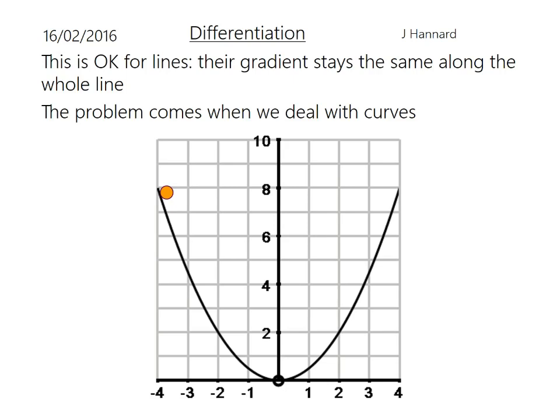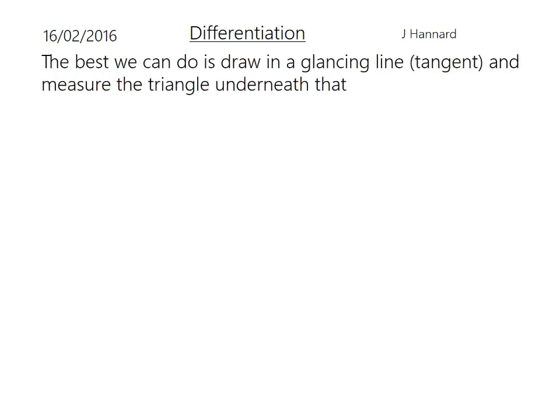That's okay for lines because their gradient stays the same along the whole line. The problem comes when we deal with curves like this one which is a classic y equals x squared curve. There's lots of lines that you can draw. There's a glance and tangent to the curve which we'll be talking about in a second. And as you can see the gradient, the slope of the line will change at various points along the curve. There's a lovely ball going down the valley as I might call it. So the best we can do there is draw a tangent and measure the triangle underneath it.